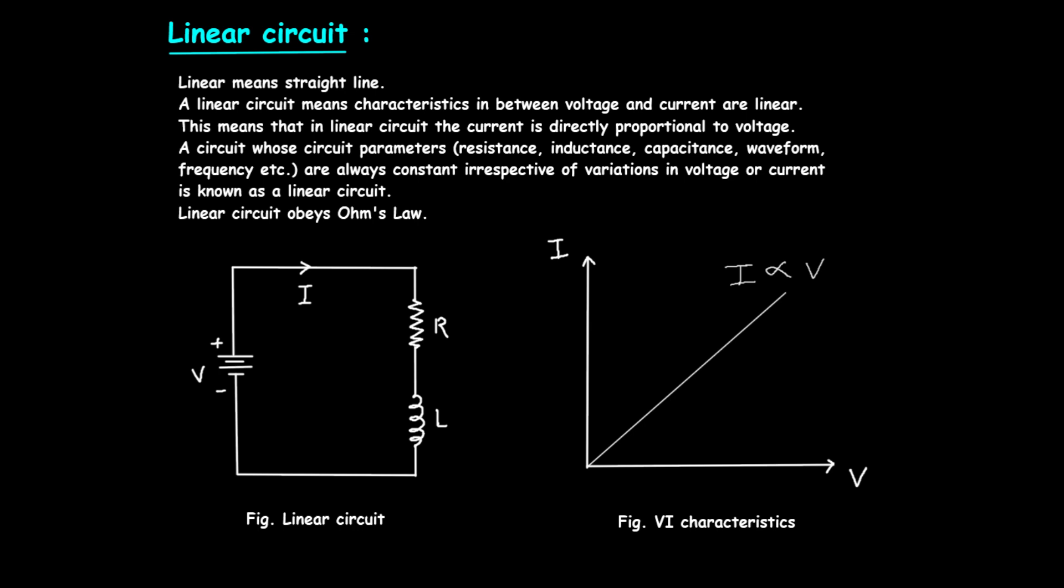To understand linear circuits better, we need to delve into Ohm's Law. Ohm's Law states that V equals I times R, meaning the voltage across a resistor is directly proportional to the current through it. In a linear circuit, if we increase the voltage, the current will increase proportionally, maintaining a straight-line relationship. This principle is fundamental in analyzing and designing linear circuits.